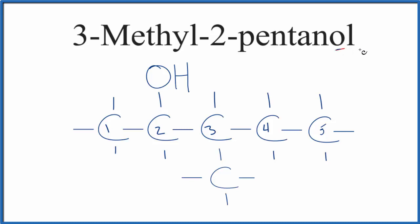So to recap, we know that we have an alcohol, and we know we have a chain of 5 carbons, and that alcohol, that OH, goes on the second carbon. On the third carbon, we stick the methyl group, that's CH3.